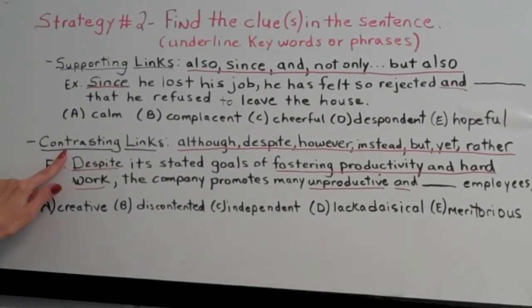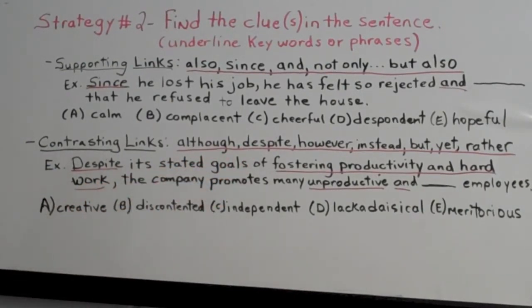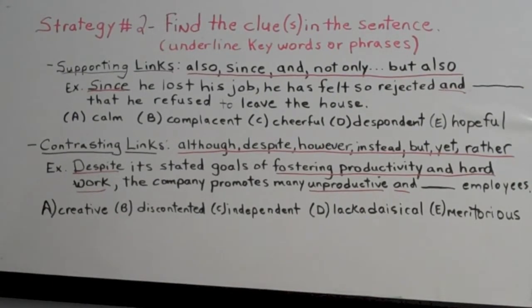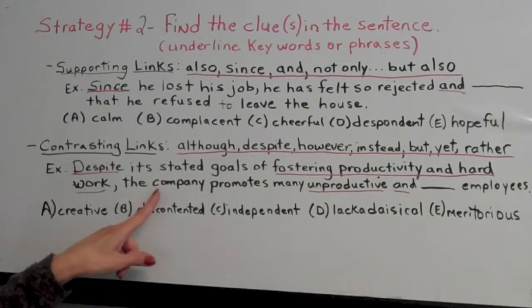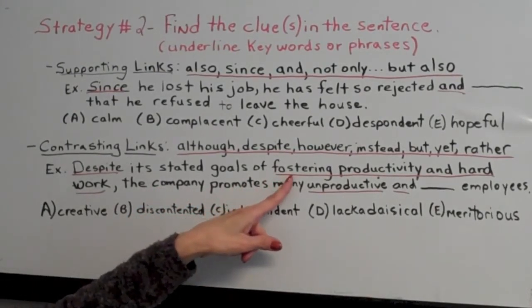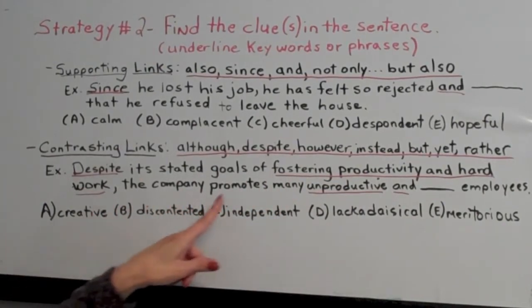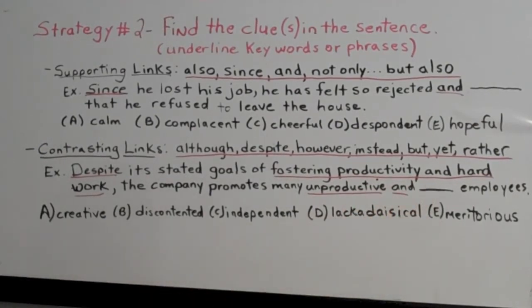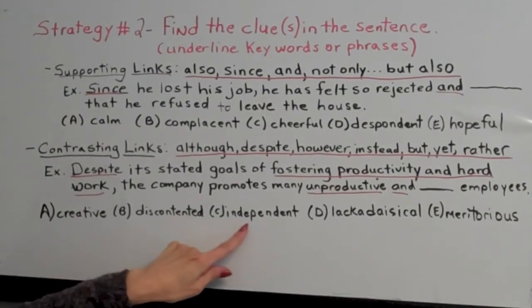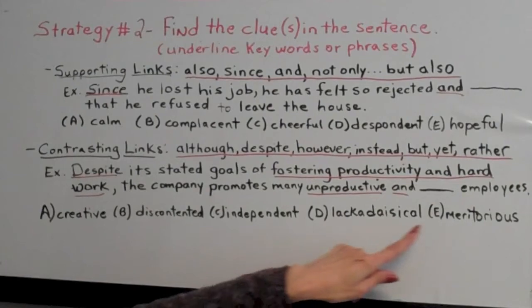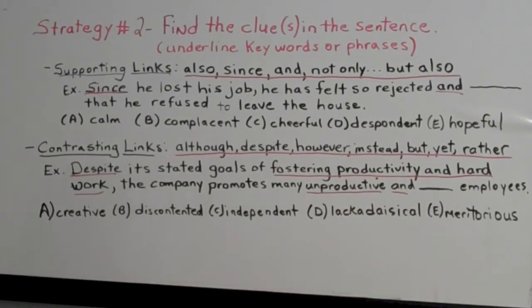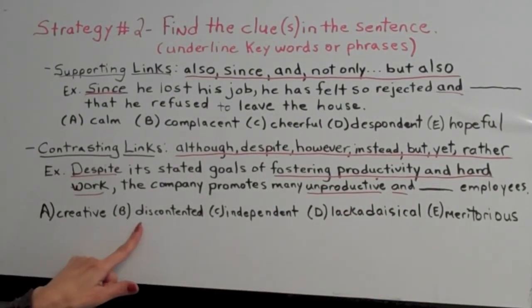Contrasting links include although, despite, however, instead, but, yet, and rather. For example: 'Despite its stated goals of fostering productivity and hard work, the company promotes many unproductive and blank employees.' A contrast is set up — the company encourages productivity, yet promotes many unproductive and, using 'and' as a supporting clue, maybe lazy employees. Looking at the choices — creative, discontented, independent, lackadaisical, meritorious — lackadaisical means lazy, so that's the answer. Supporting and contrasting links really help you find the right words.